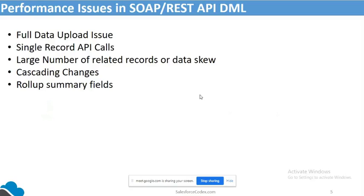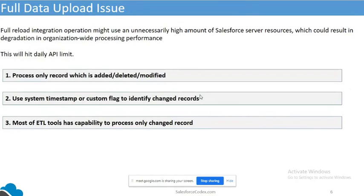The key issues are: single record API calls, a large number of related records, or data skew — we normally know that data skew problems come with cascading changes. Let's go through each one in detail with an example. The full data upload issue basically comes when two systems are connected to synchronize their data, and sometimes they send the complete dataset to upload rather than only the changed records.